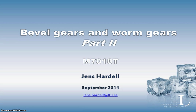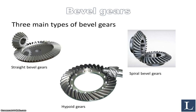Welcome to the second part of this lecture in Advanced Machine Elements on bevel gears and worm gears. We will be discussing bevel gears, and there are three main types: the straight bevel gears, the spiral bevel gears where you have a spiral shape of the tooth, and the hypoid gears. All three are different types of bevel gears.